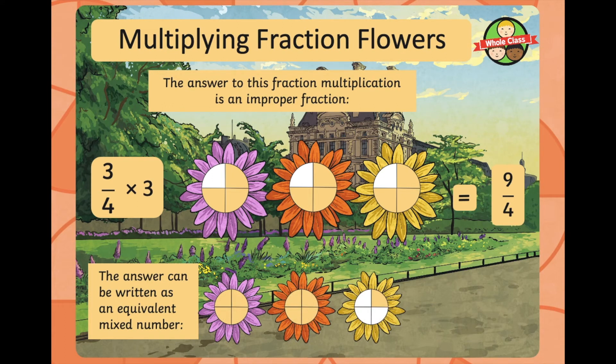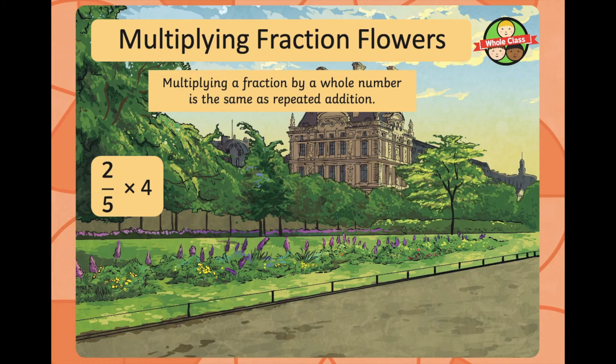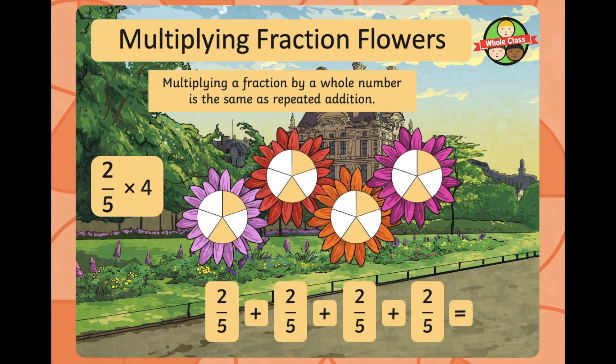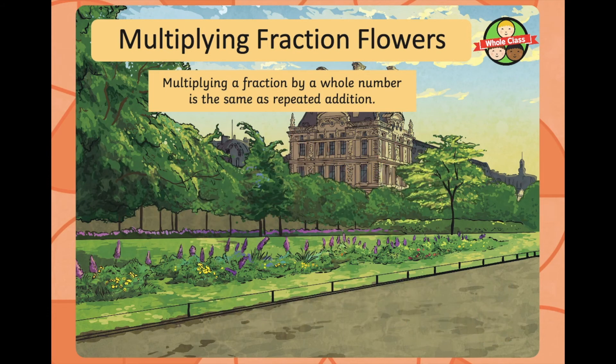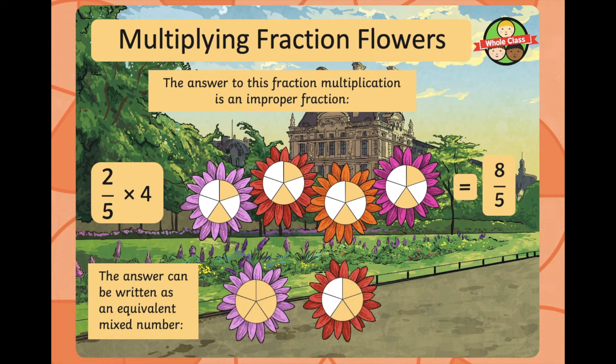So, here we've got the same amount of quarters colored in. And nine quarters is two and one quarter. They are equivalents. Two fifths times four is the same as adding two fifths four times, which is eight fifths. If we were to look at that as a mixed number, you can see here that we've got the same amount of fifths colored in, which is eight fifths, which is equivalent to one and three fifths.